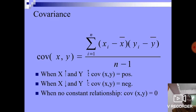When x increases, y also increases, then our covariance (x,y) is positive. When x increases and y decreases, then our covariance (x,y) is negative. When no constant relationship, covariance (x,y) is 0.